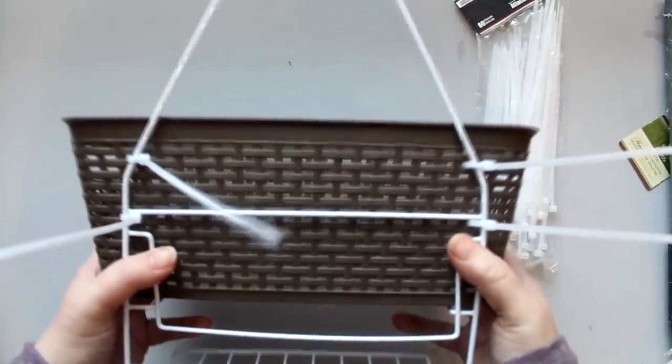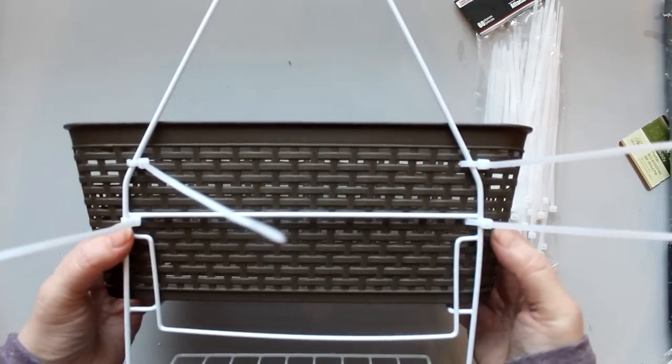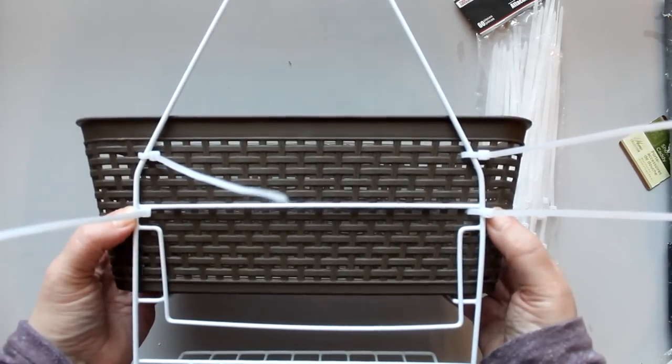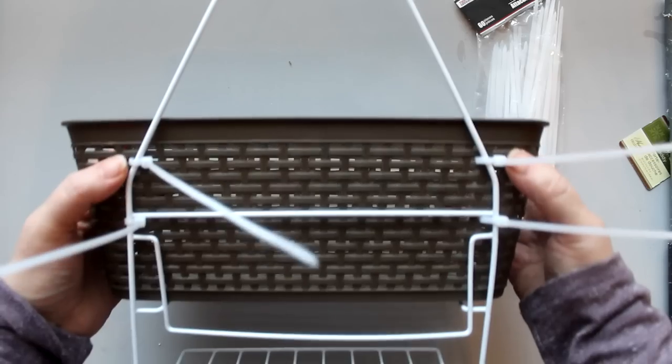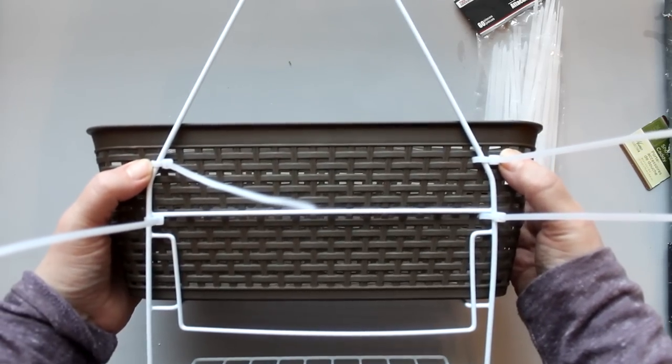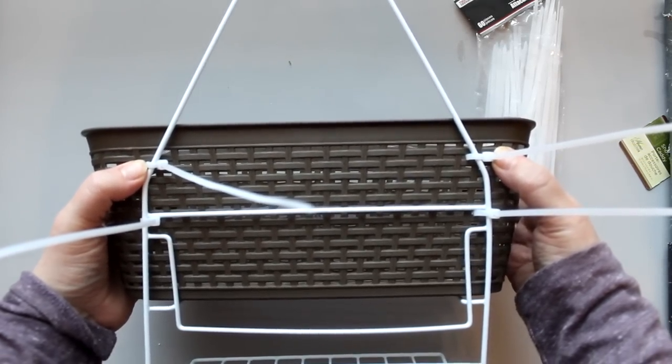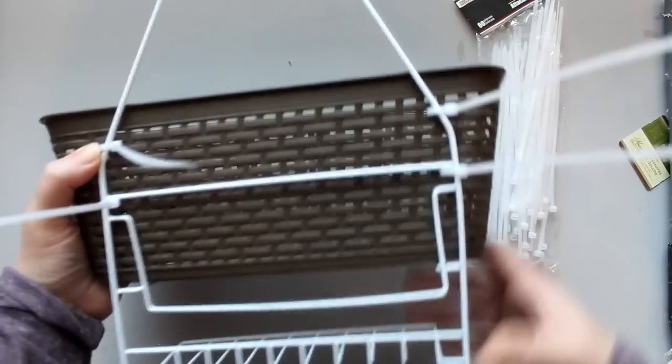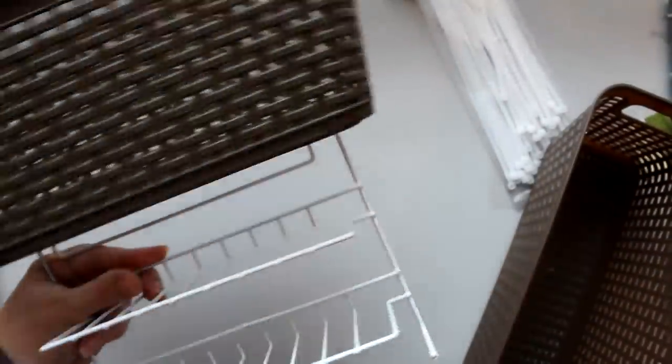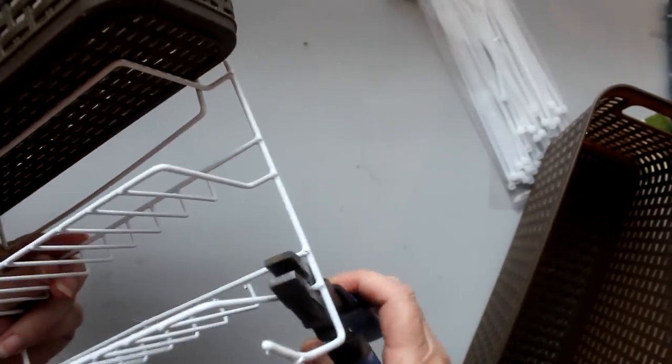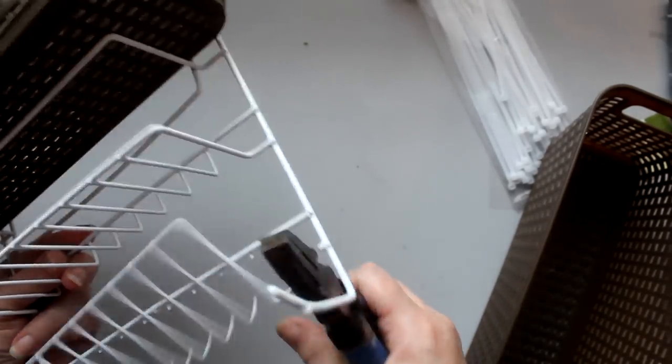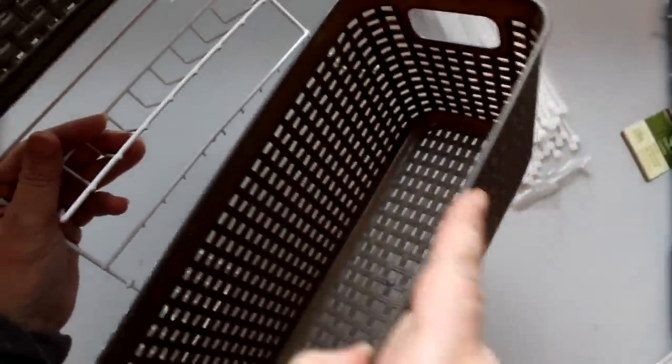To attach the top basket, I threaded zip ties underneath of the horizontal bar and through the basket weave in the middle of the basket, and then also two zip ties towards the top through the second row of the basket weave and around the handle of the caddy. In order to create clearance to get items in and out of the second bin, I had to remove the cross bars in front of the bottom shelf with some wire cutters, but made sure to retain that back horizontal bar.